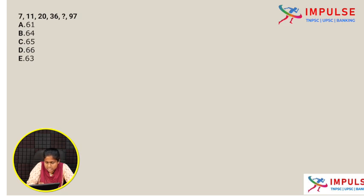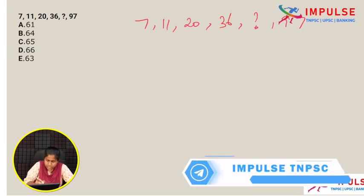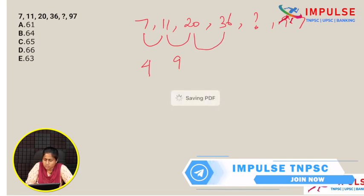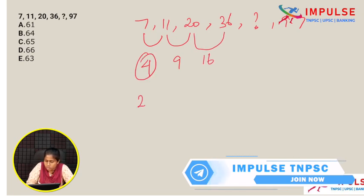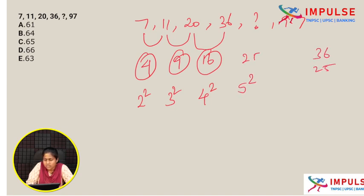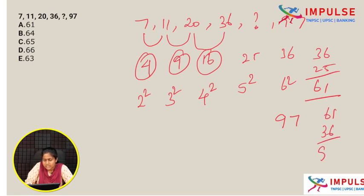Next question: 7, 11, 20, 36, ?, 97. The differences are: 4, 9, 16 — which are 2 squared, 3 squared, 4 squared. So 5 squared is 25, and 36 plus 25 is 61. Checking: 6 squared is 36, and 61 plus 36 is 97, which is correct. So the answer is 61.